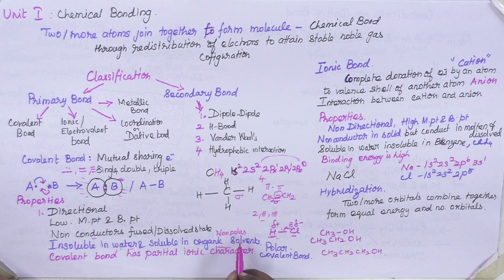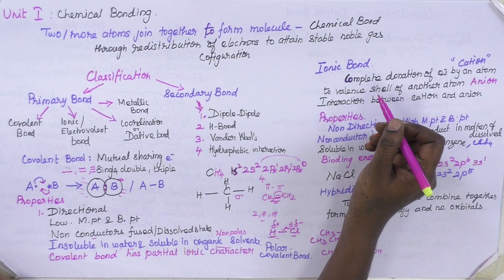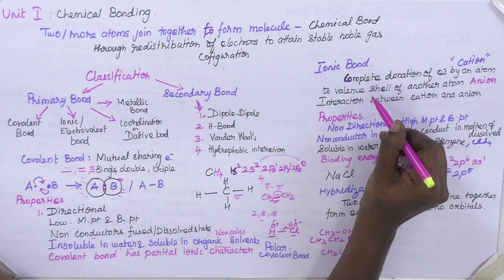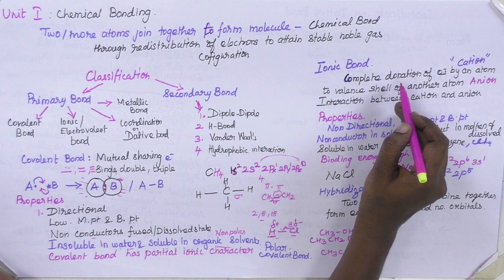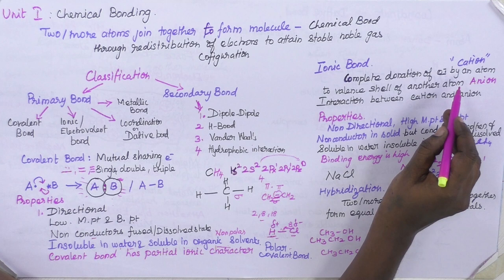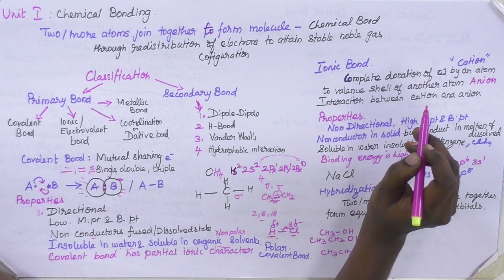Now we will see what an ionic bond is. The ionic bond is nothing but the complete donation of electrons by one atom to the valence shell of another atom, forming a cation and an anion. The donation of one or more electrons by an atom forms a cation, and the acceptance of electrons forms an anion. The interaction between the cation and anion is called an ionic bond.